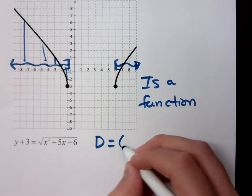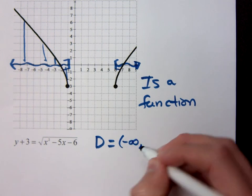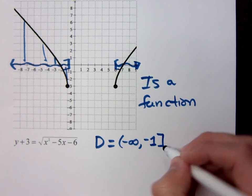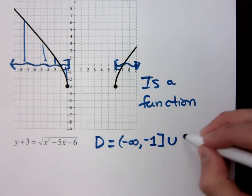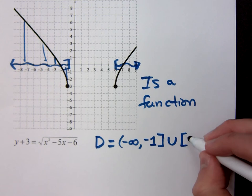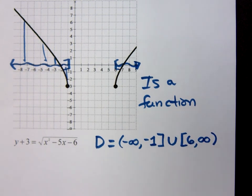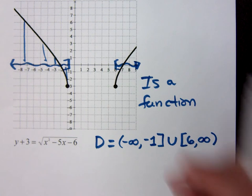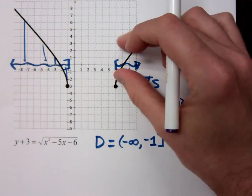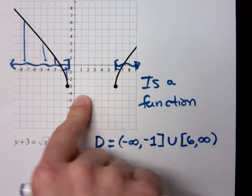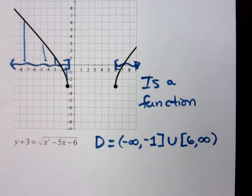From negative infinity to negative one, union, open bracket six to infinity. Is that okay for the domain? You compress all this stuff onto the x-axis, and that's what you have. Notice there's this huge gap right here where you don't have any x-values. So I don't have anything there.